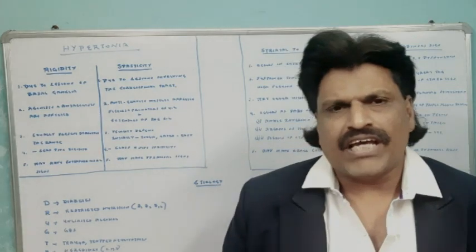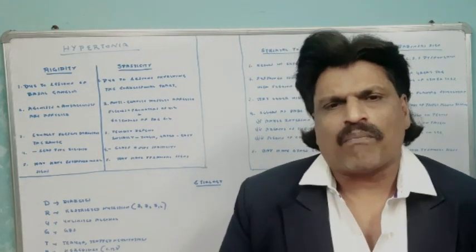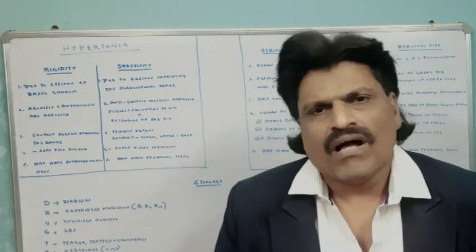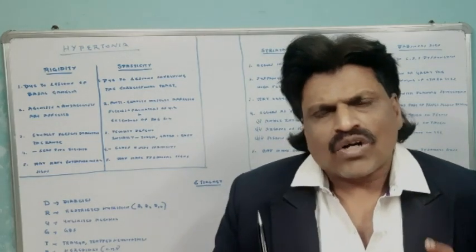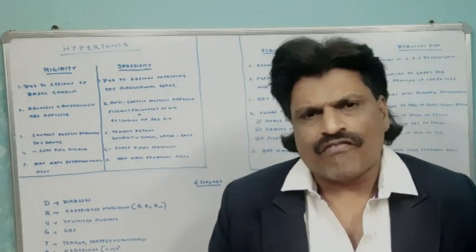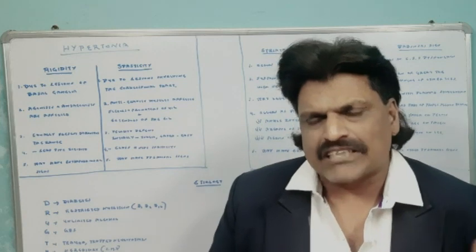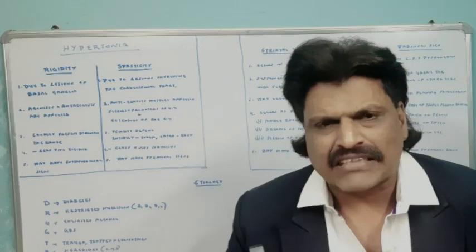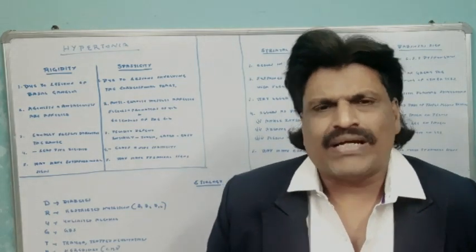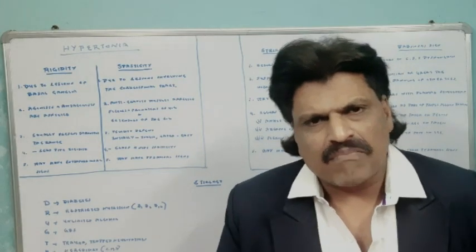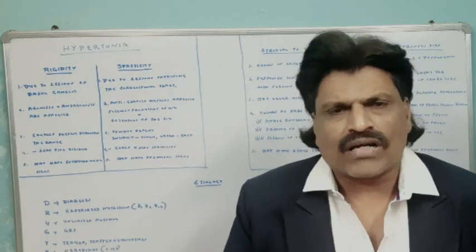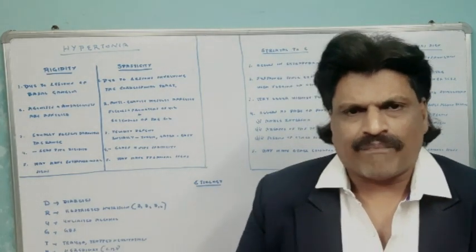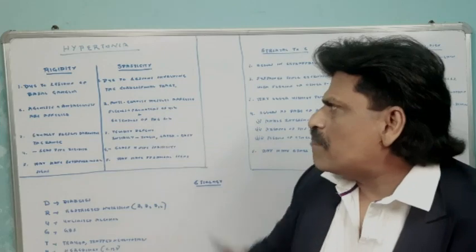Today we are going to talk about a very basic but important topic: hypertonia and its various types. Tone is defined as the resistance offered by the muscles to passive movements. Tone can be hypotonia — a decreased tone seen in cerebellar lesions or lower motor neuron lesions — or an increased tone, which is known as hypertonia.